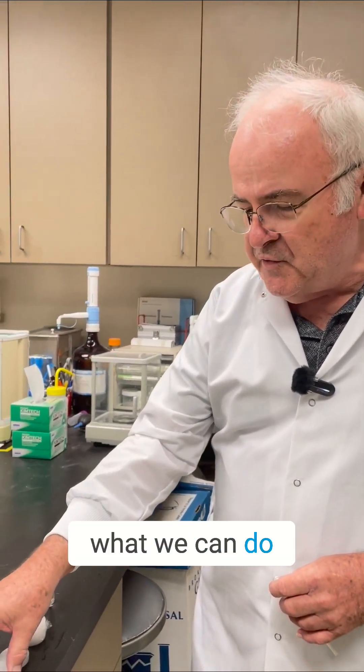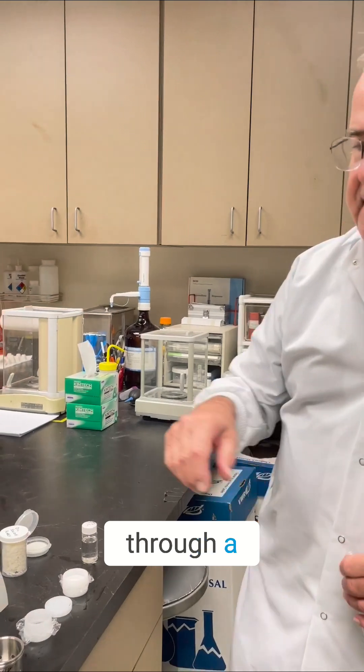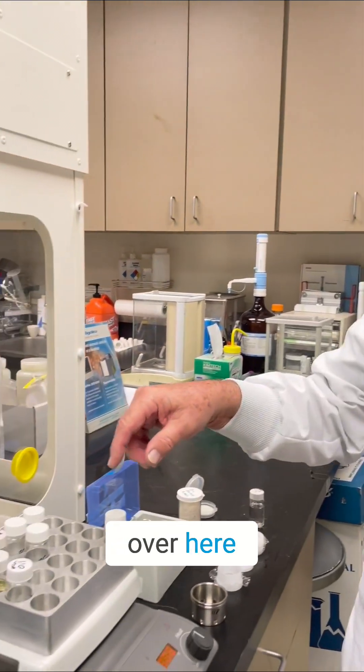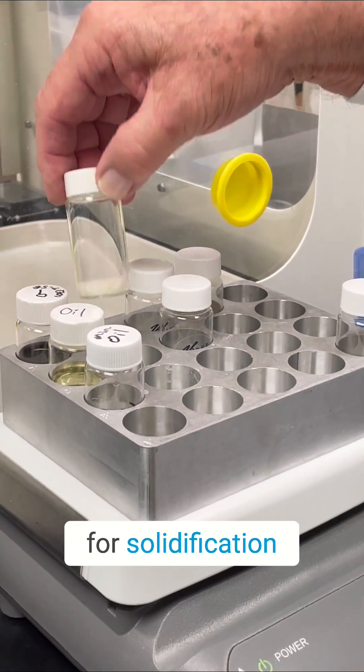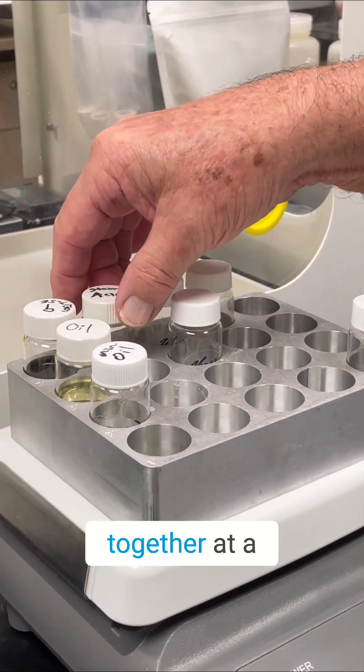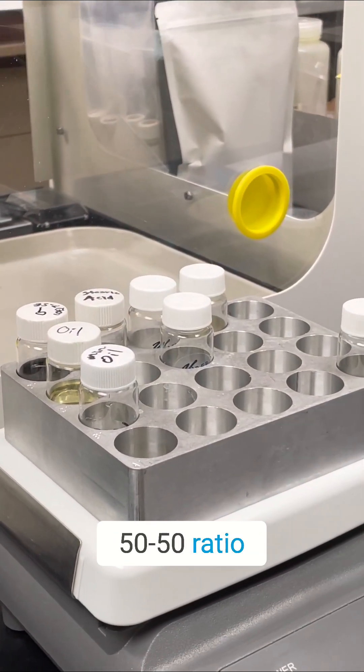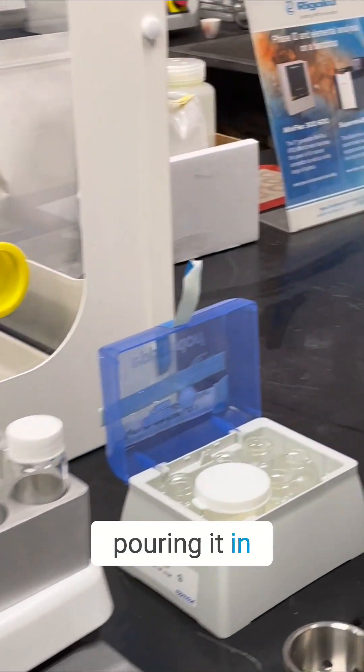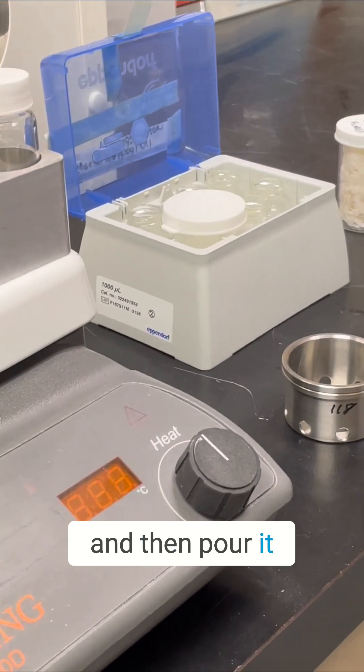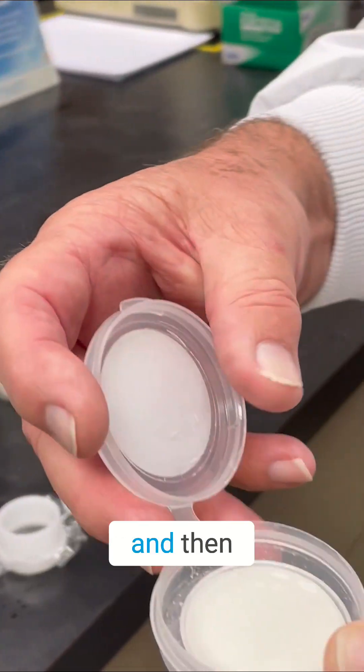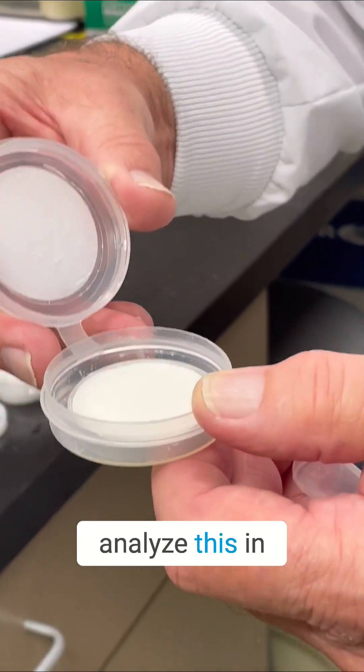So what we can do is we can go through a solidification process over here. So we have our liquids, and we have some material for solidification, and we mix them together at a 50-50 ratio, and we end up pouring it in at 120 degrees, 4 ml, and then pour it into a solid form, and then analyze this in the machine.